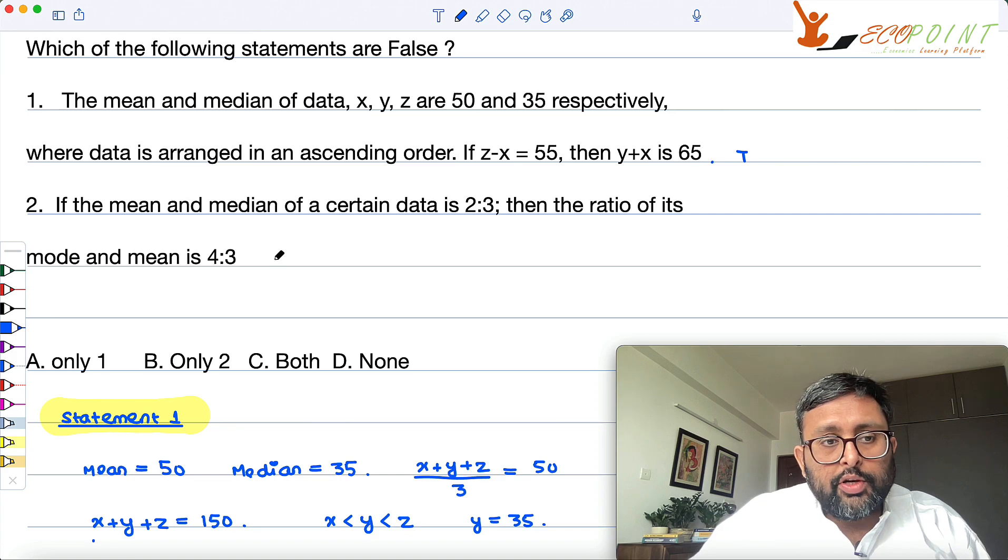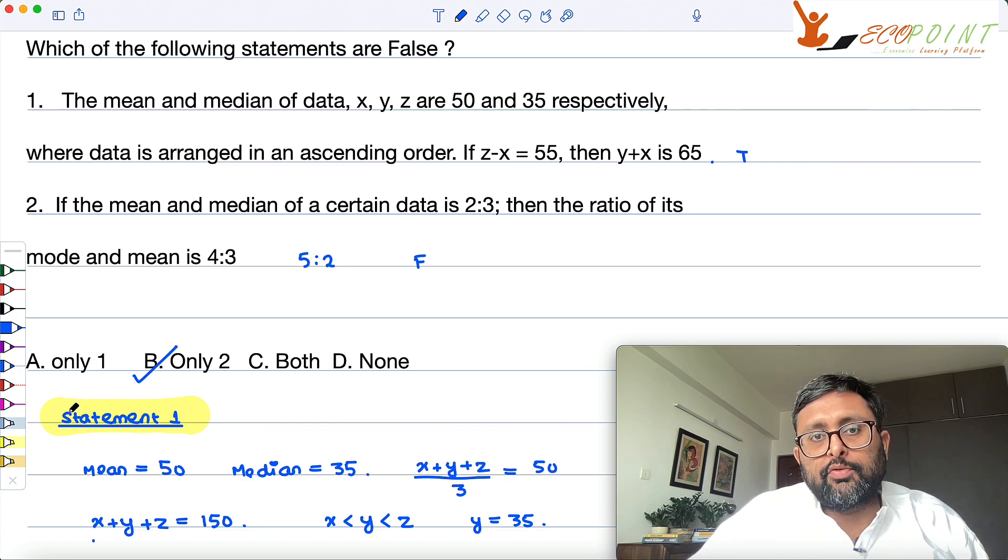So you are given it 4 is to 3. Mode to mean is 5 is to 2. So what is given to you is 4 is to 3. So this should be 5 is to 2. This one is false. So which of the statement is false? The only 2 is false, right?